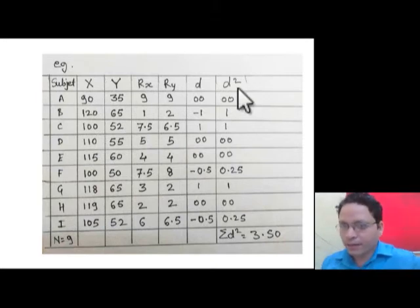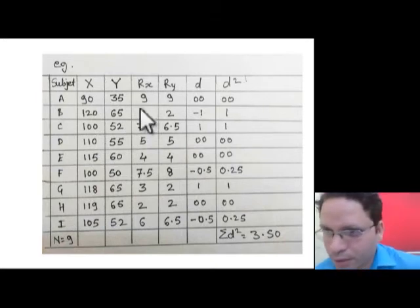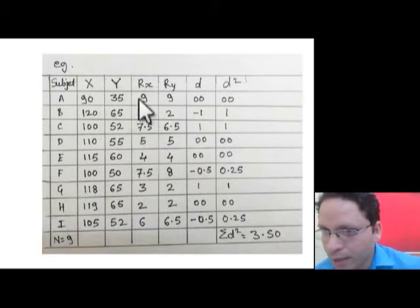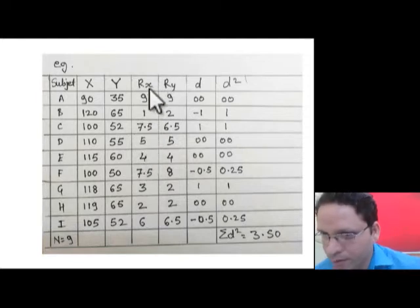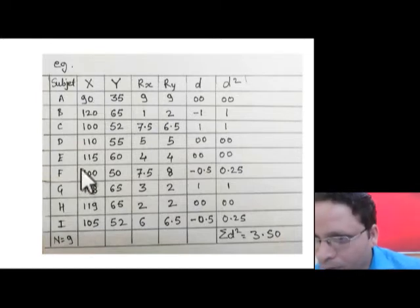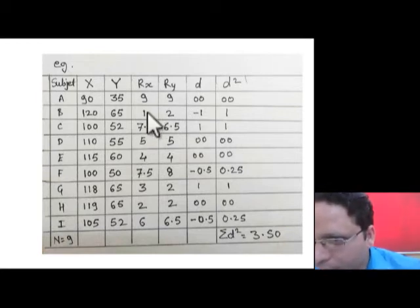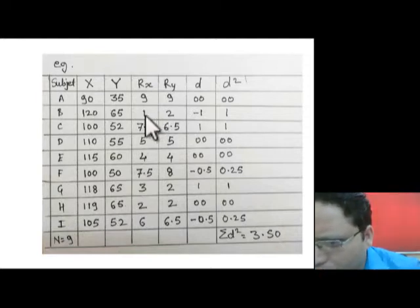We have column X and column Y. We need to make the Rx column for column X and the Ry column for column Y. In this column, we give ranks in descending order — the highest number gets rank 1. In this example, 120 is the highest number in the column, so 120 gets rank 1.